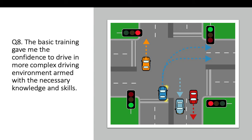Question eight: the basic training gave me the confidence to drive in more complex driving environments armed with the necessary knowledge and skills. Here we have a situation where a blue car is taking a right turn at traffic lights showing a green circle — no turning arrows — so the give way rule needs to be correctly applied in this situation.